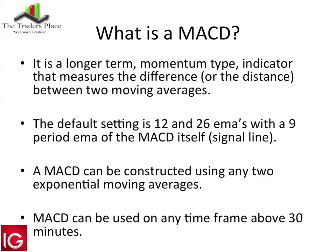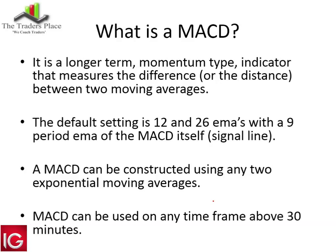A MACD can be constructed using any two exponential moving averages. I use the standard 12 and 26, but if you want to see how your chart is doing on a momentum basis, you could change the MACD to the two moving averages you already use — for example, a 100 versus 200 MACD, or 21 versus 89, however you want to set it up.